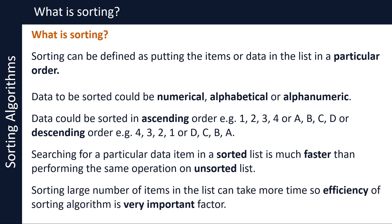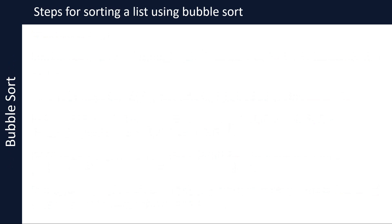In computer science, we use sorting algorithms to sort lists. Sorting involves comparing items in the list to put them in the right order. If there are a large number of items in the list, this can take more time, so the efficiency of a sorting algorithm is a very important factor. There are various sorting algorithms used in computer science. Let's look at the bubble sort algorithm now.